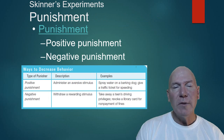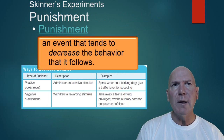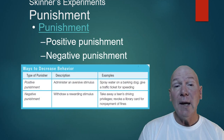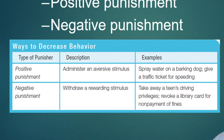The opposite of reinforcement is punishment. When a behavior is reinforced it increases or strengthens; with punishment, it decreases or weakens. We have positive punishment and negative punishment. Positive punishment means administering an aversive stimulus — for example, spraying a barking dog with water. You've added something to the situation, which weakens the barking response. If you speed and receive a ticket, that's positive punishment.